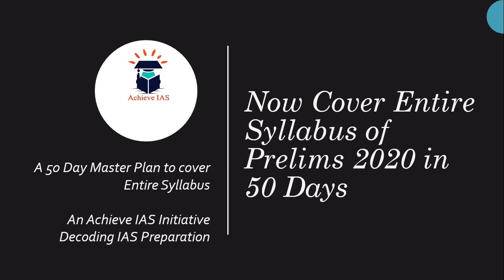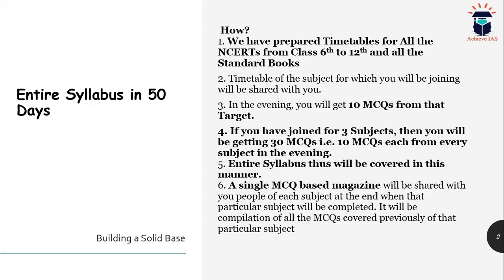You need not worry, because we have come up with a master plan to cover your entire syllabus — a 50-day master plan. We have prepared a timetable for each NCERT from class 6 to 12th for each subject, and the same applies to standard books. For example, for history we have NCERTs from class 6 to 12th, so we have prepared a 50-day timetable to cover them. Similarly, we have prepared a 45-day timetable to cover Modern India by Spectrum Publications, authored by Rajiv Ahir.